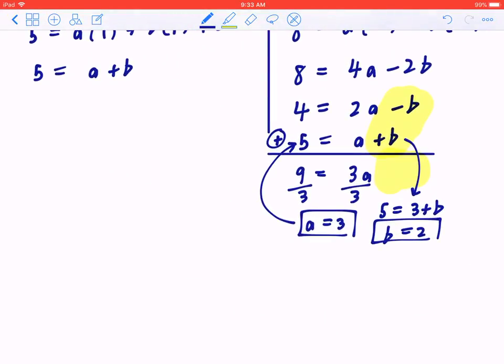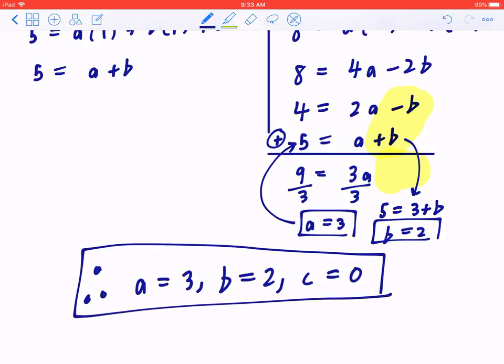So as a final statement, again, therefore, a equals three, b equals two, c equals zero, just like that.